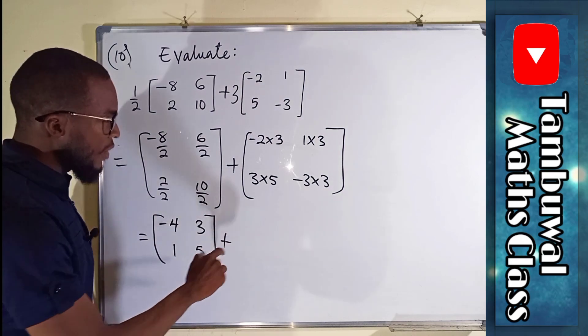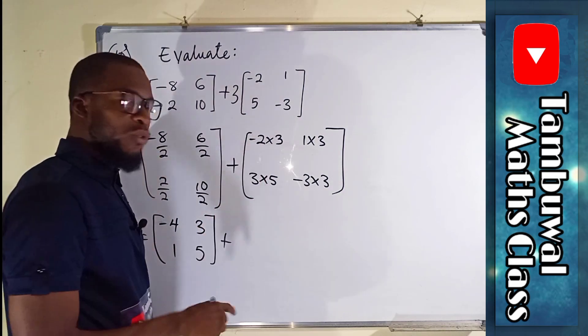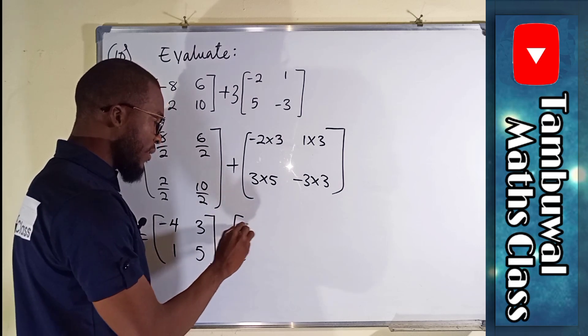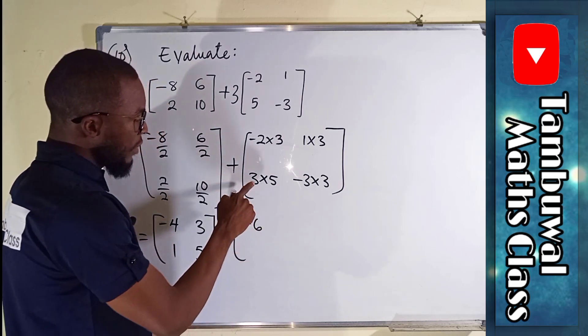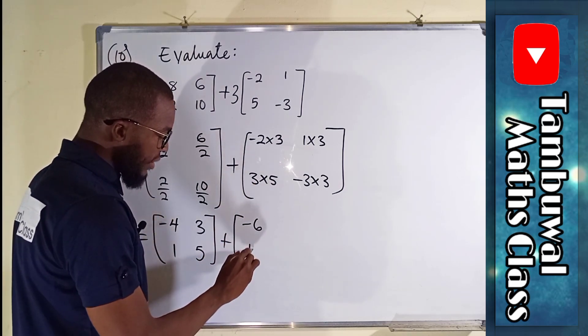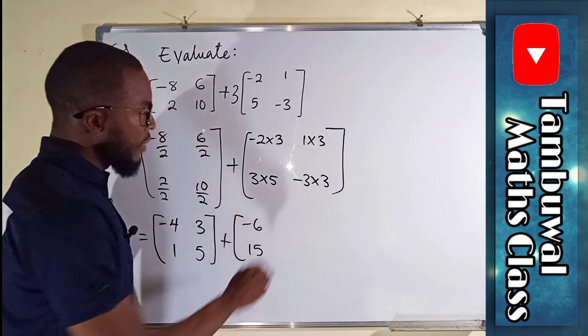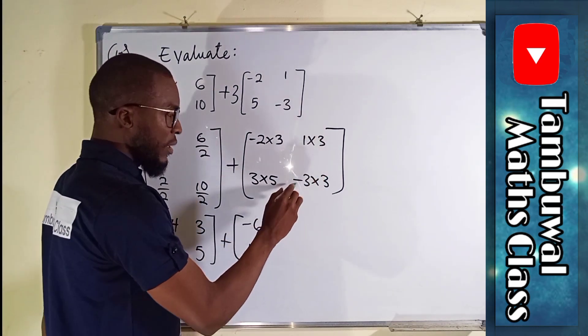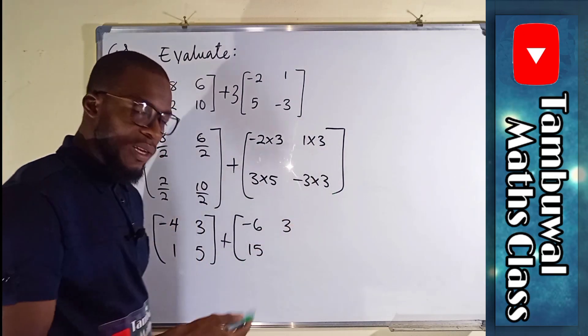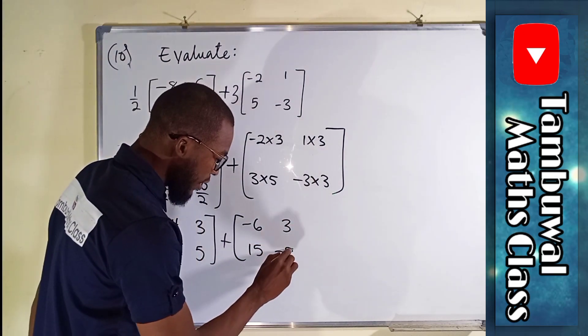We add it together with negative 2 times 3 is negative 6. 3 times 5 is 15. 1 times 3 is 3. Negative 3 times positive 3 is negative 9.